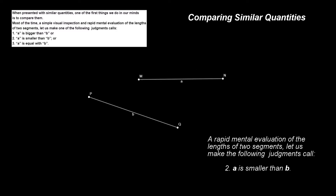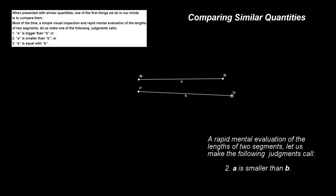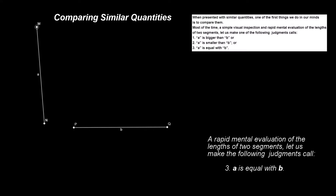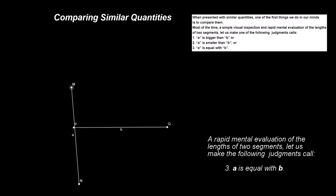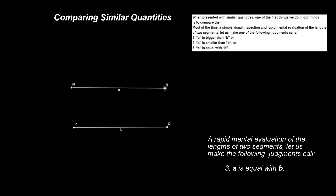1. A is bigger than B, or 2. A is smaller than B, or 3. A is equal with B. To get a more precise assessment of the lengths of the two segments relative to each other, we need to move to a new level of understanding and quantify this.